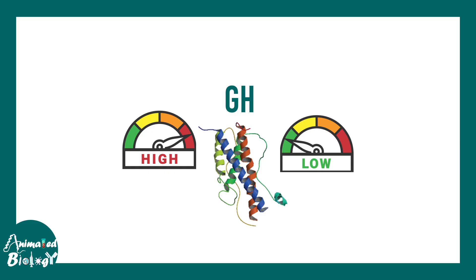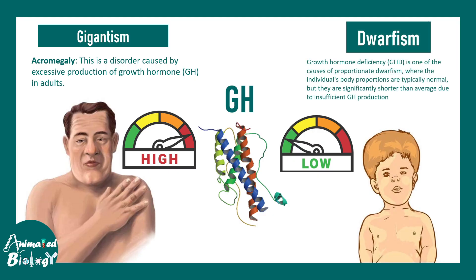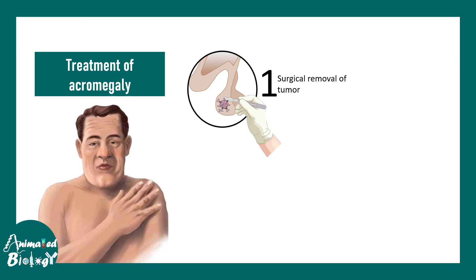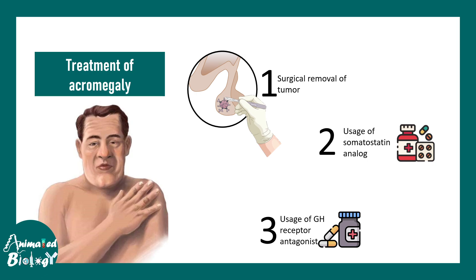Too high or too low GH can both cause problems. Excess GH leads to gigantism or acromegaly depending on when it occurs, while too little GH can lead to cretinism or dwarfism. Treatment options include surgical removal of the tumor causing excess growth hormone production. There are also treatments using somatostatin analogs that inhibit the entire axis, acting like a negative feedback to reduce growth hormone action. Growth hormone receptor antagonists can also be used so that even if excess GH is present, its effects cannot be imparted. By modulating this hormonal axis, acromegaly can be treated.